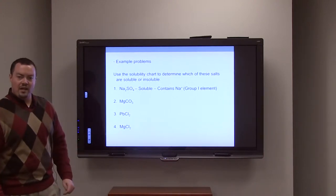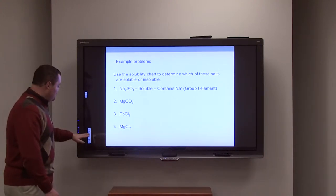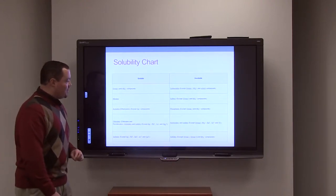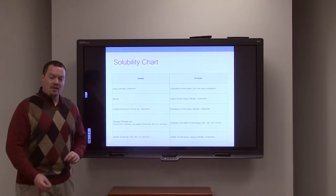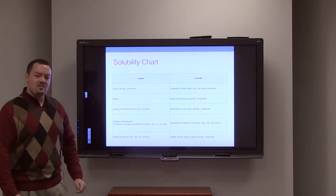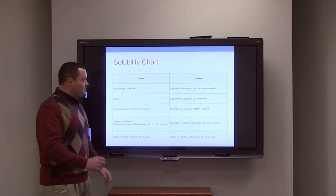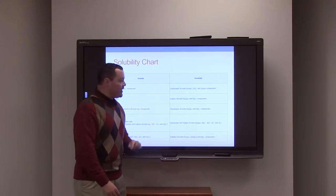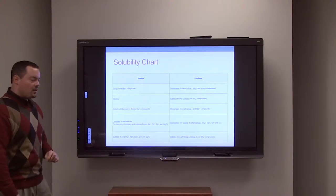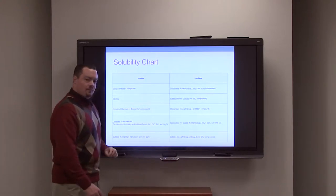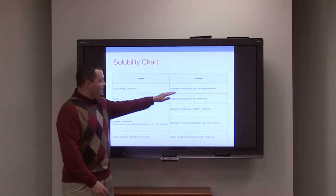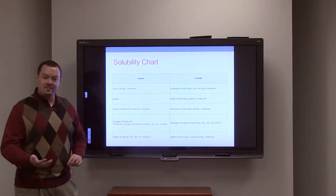The next compound is magnesium carbonate. Going back to our solubility chart, magnesium carbonate is made up of carbonate. We find carbonate in our insoluble column — it is insoluble unless mixed with a group 1 alkali metal or an ammonium ion. Magnesium is none of those, so therefore magnesium carbonate would be insoluble.